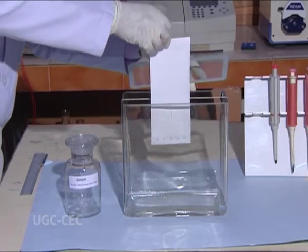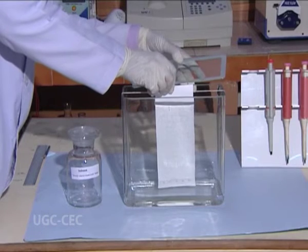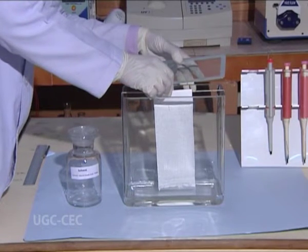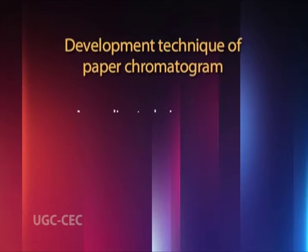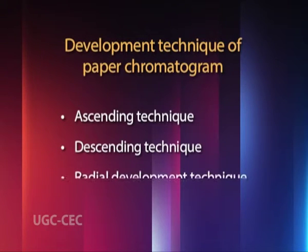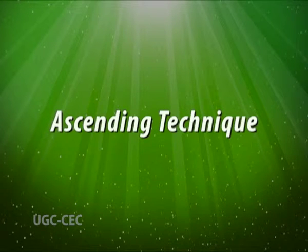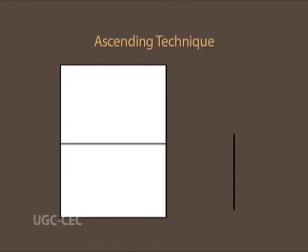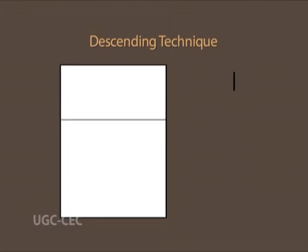Hang the Whatman filter paper in such a way that it is dipped in the solution but does not touch the bottom of the jar. There are three main techniques for development of paper chromatograms: ascending technique, descending technique, and radial chromatography. In both ascending and descending cases, the solvent is placed in the base of a sealed tank or glass jar to allow the chamber to become saturated with solvent vapours. After equilibrium of the chamber is achieved, the development of the chromatogram may be started.